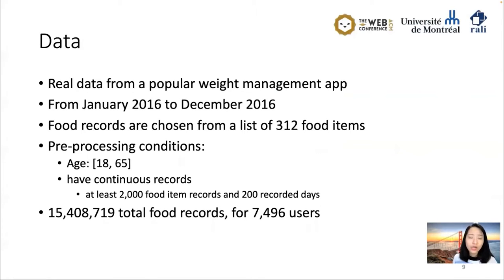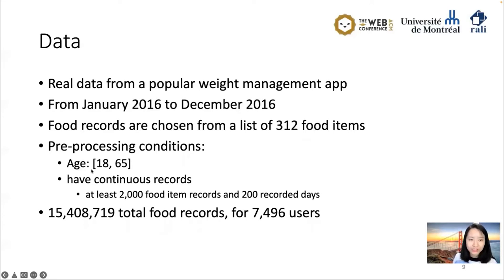Our data is real data collected from a popular weight management app, from January 2016 to December 2016. Food records are chosen from a 312-item food list. We did some preprocessing to keep user age between 18 and 65, and we required users to have continuous records. After preprocessing, the dataset has around 50 million food records and 7,000 users.